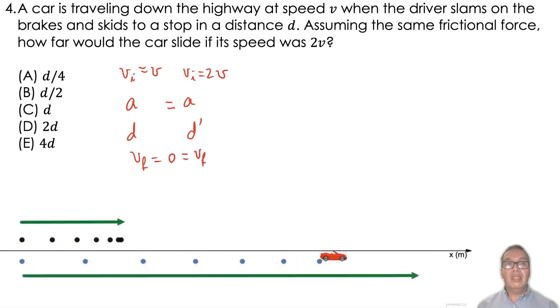Therefore, in your model for constant acceleration, we have final velocity squared is equal to initial velocity squared plus 2 times acceleration times displacement, where your final velocity is zero.